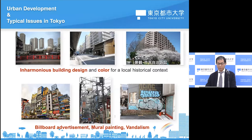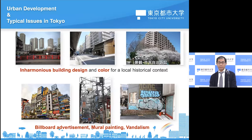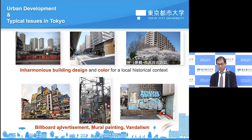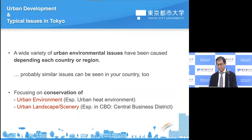There is also inharmonious building design and colors against local historical context. These areas are originally very historical, but nowadays you can see high-rise buildings in the background. Sometimes billboard advertisements, mural paintings, or vandalism can be seen in town. Sometimes this gives Tokyo or Akihabara a certain identity, but at the same time those kinds of advertisements can be a kind of noise in the landscape.